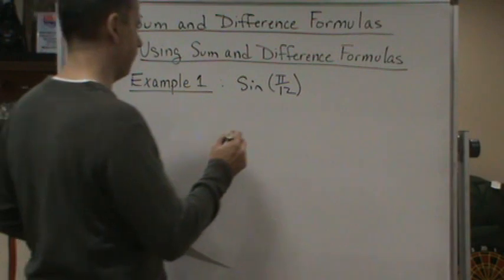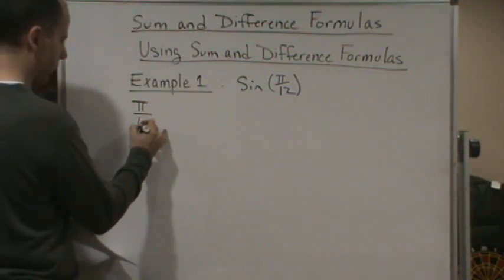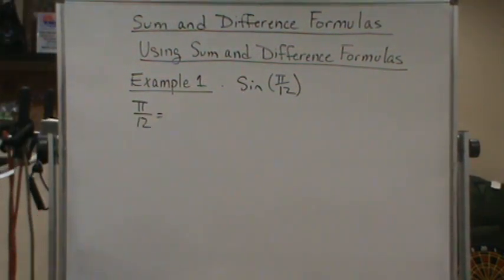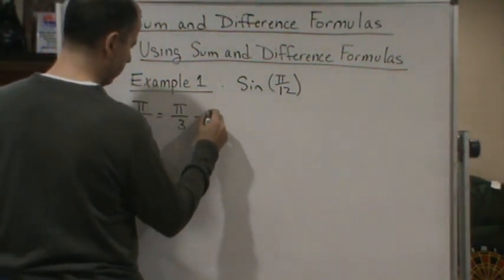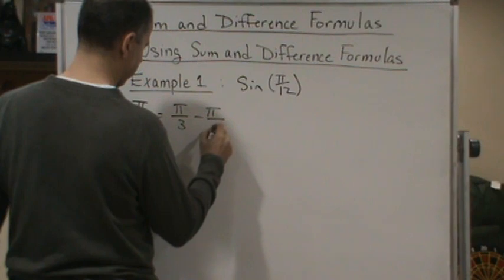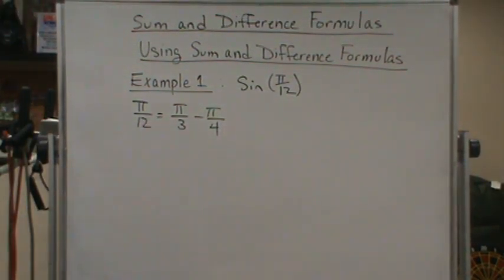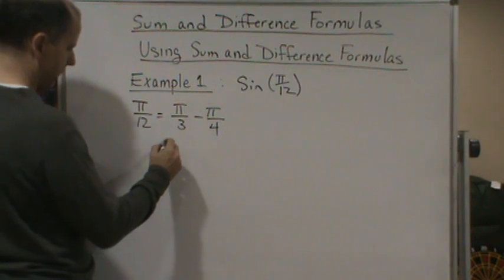So we're going to use the fact that we can write pi over 12 as the difference between pi over 3 and pi over 4. And if you don't see that, then just look, we could do, this is 4 pi over 12 minus 3 pi over 12.